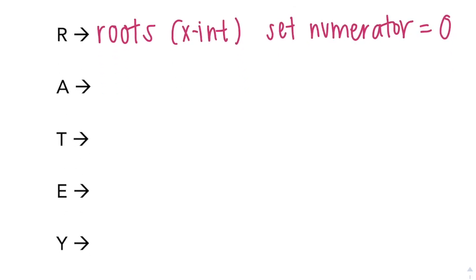The Y stands for y-intercept, which you do by plugging in 0 for x. In RATEY, it's just a form that people like because it tells them like R-A-T-E-Y what each thing stands for and when they do it.